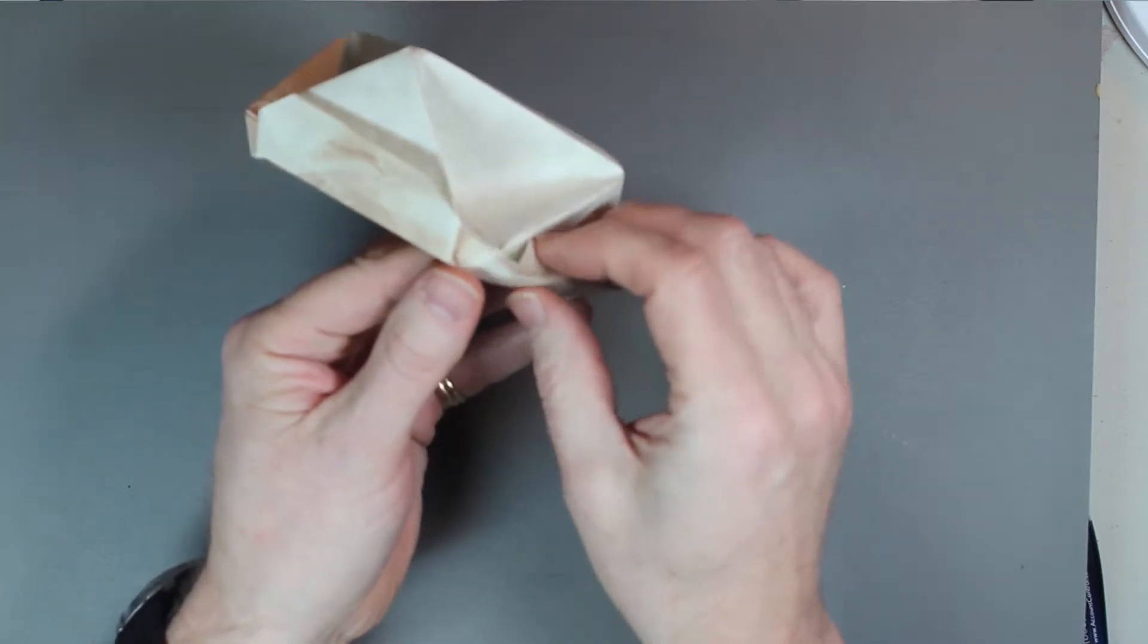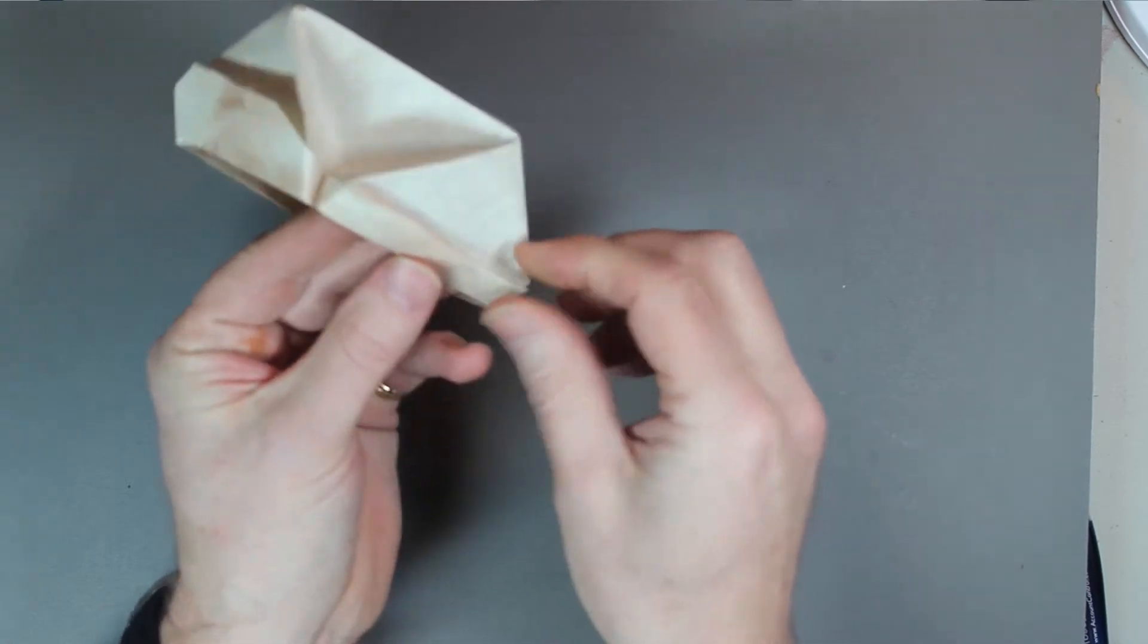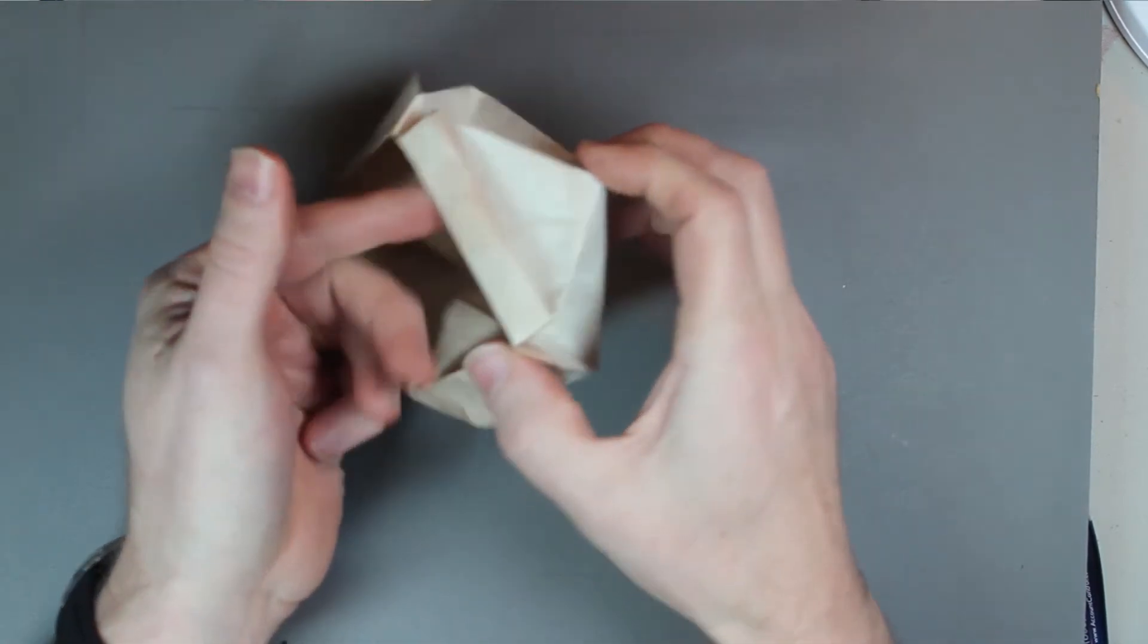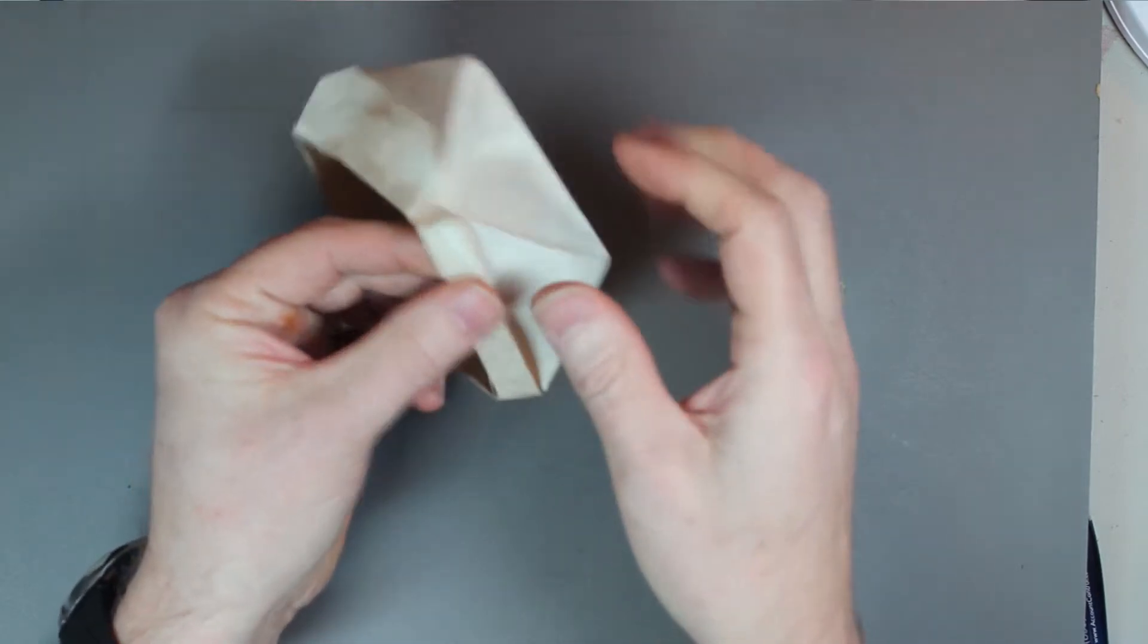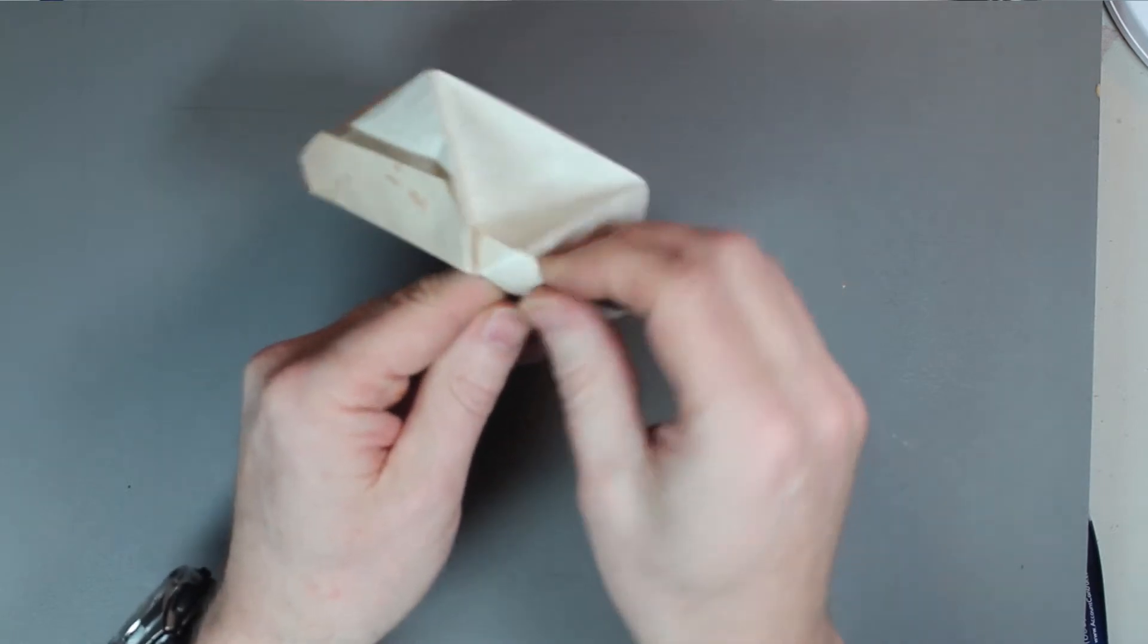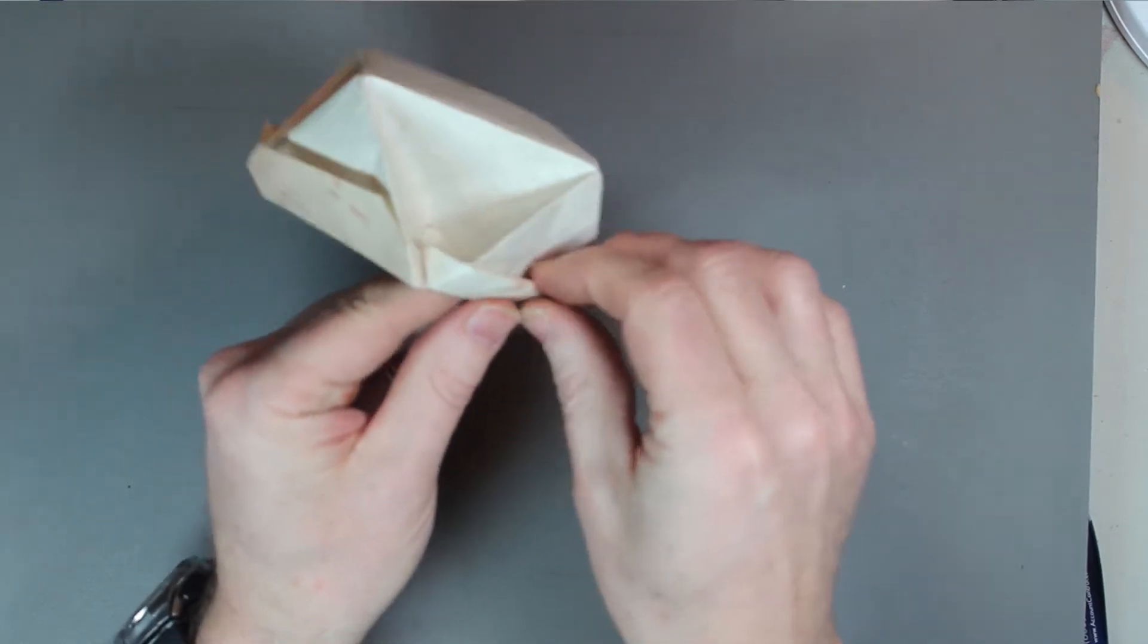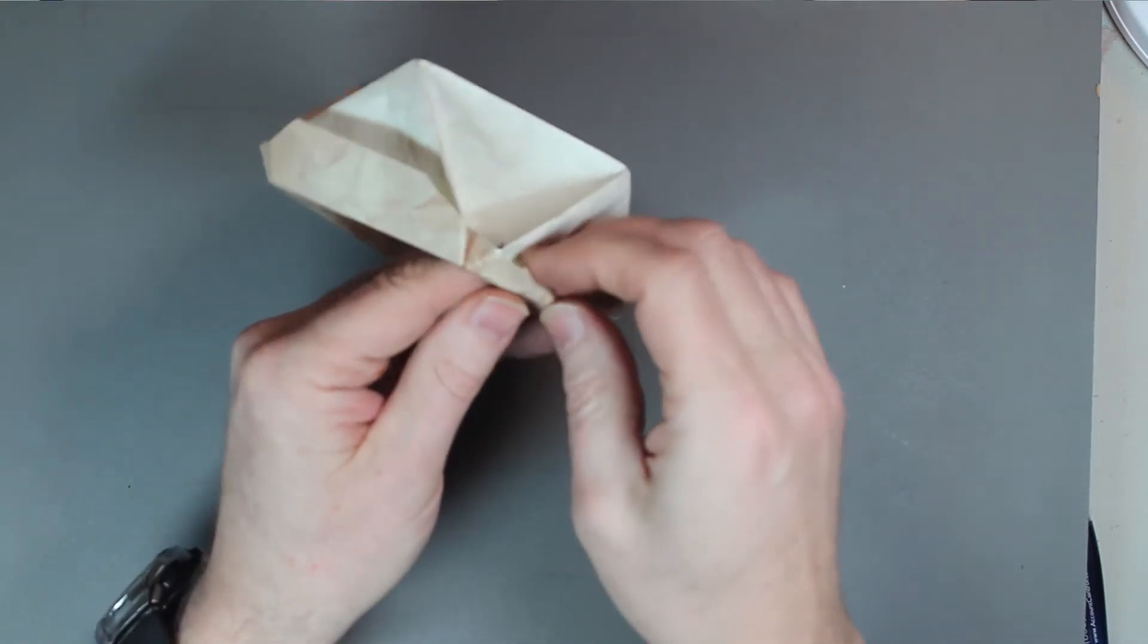And we're just going to crease it under exactly in half. And depending on how your paper's behaving, you don't necessarily have to crease it. You can kind of leave it a little bit round if you like, which I like that quality. And this last step again just makes the box hold together and gives it a very firm rim.